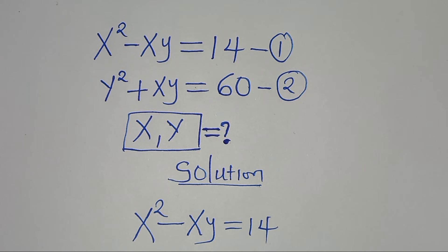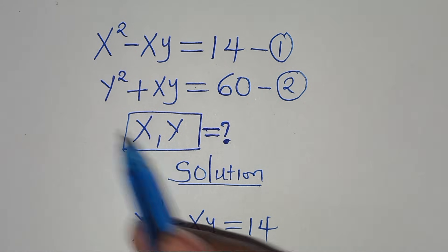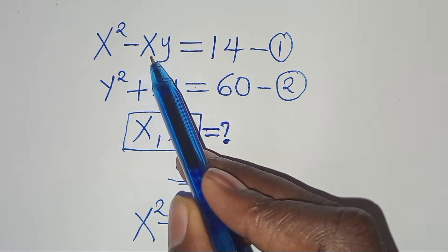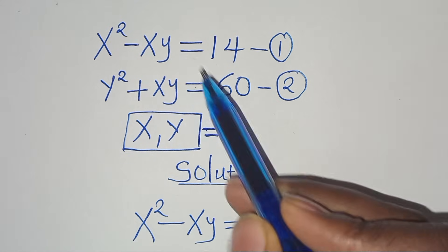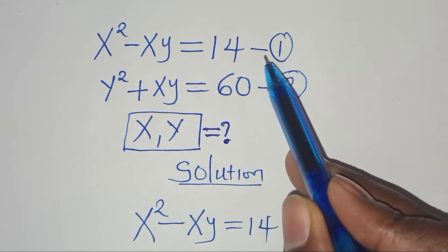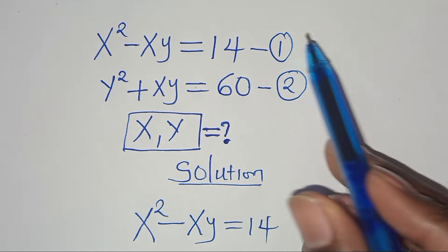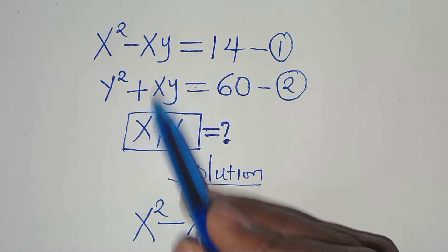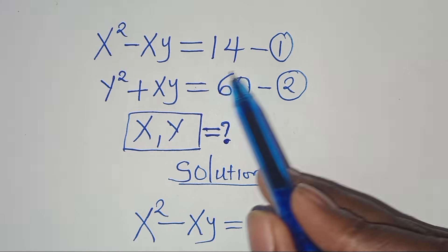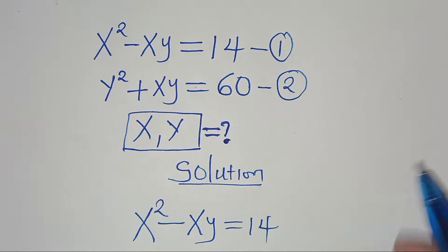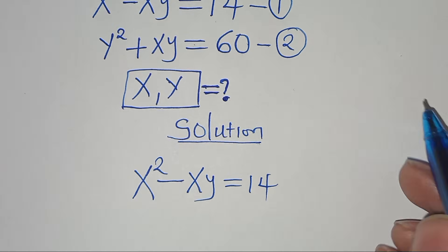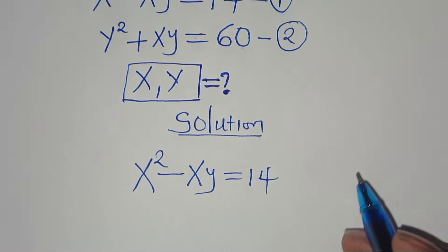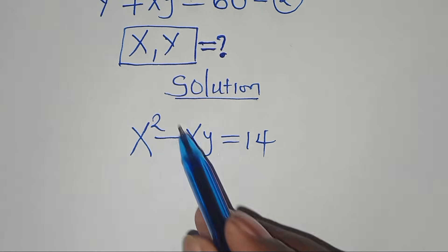Hello everyone, welcome to solve this nice algebra problem: x squared minus xy equals 14 — let's call this equation 1 — and y squared plus xy equals 60 — let's call this equation 2. So what is the value of x and what is the value of y? Let's provide a solution.